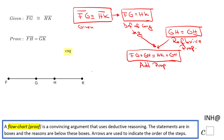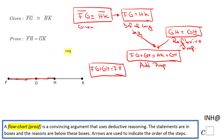Now let's see: FG plus GH — if you remember, FG plus GH is FH. And this is the segment addition postulate, which is the reason for this box.